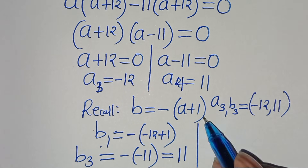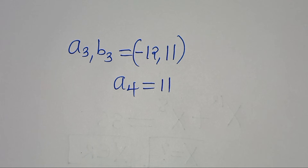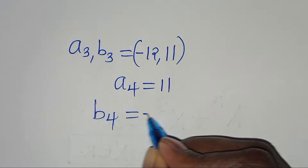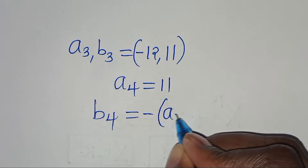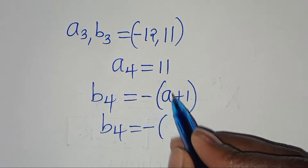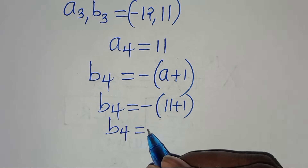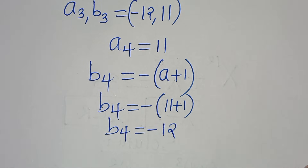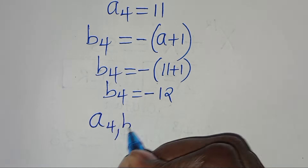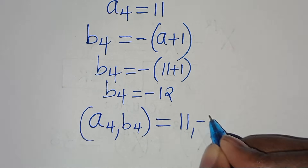For the fourth solution set, given a4 equals 11, we solve for b4: b4 equals negative of a plus 1, so b4 equals negative of 11 plus 1, which is negative 12. So the fourth solution set is: a4 comma b4 equals 11 comma negative 12.